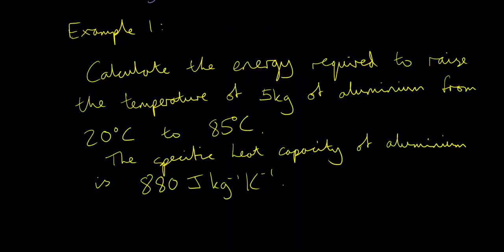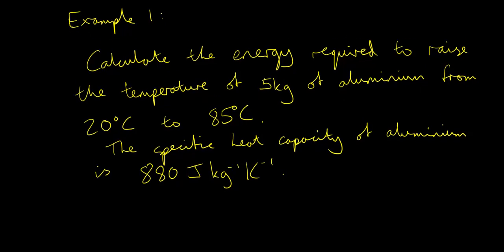Let's do an example. Calculate the energy required to raise the temperature of 5 kilograms of aluminium from 20 degrees Celsius to 85 degrees Celsius. The specific heat capacity of aluminium is 880 joules per kilogram per Kelvin.